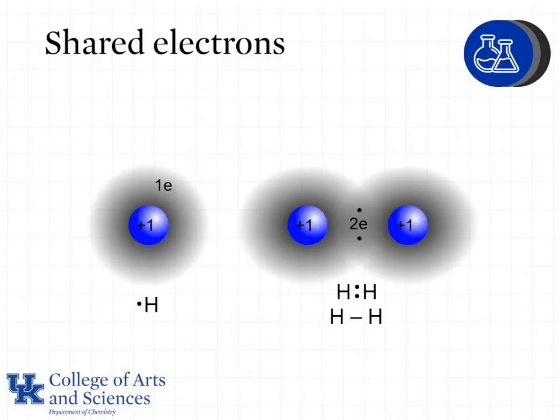When we looked at ionic compounds, electrons were being transferred. For example, in sodium chloride, sodium gave up an electron and chlorine gained an electron to form a cation and anion respectively.